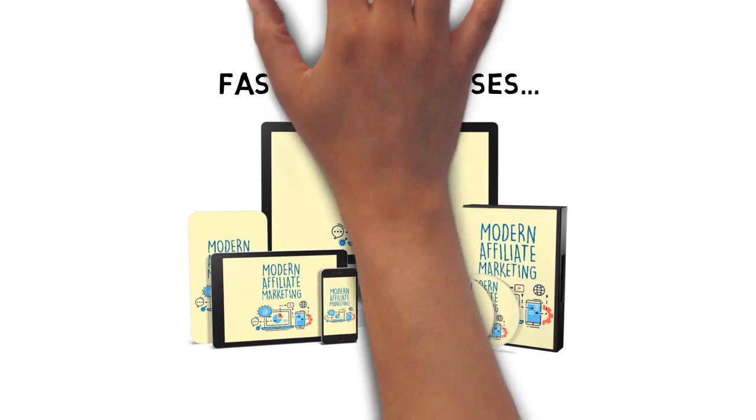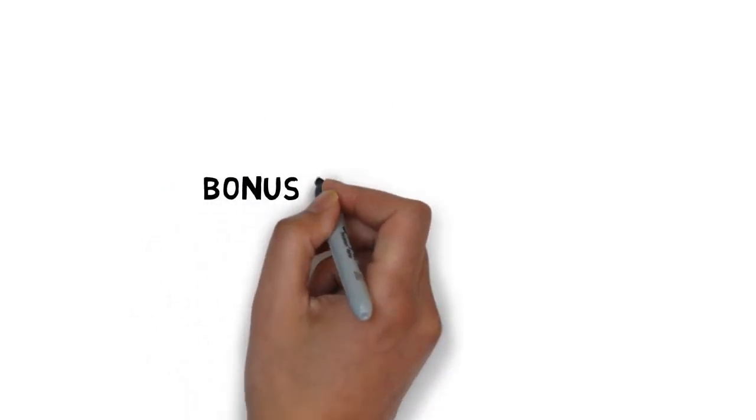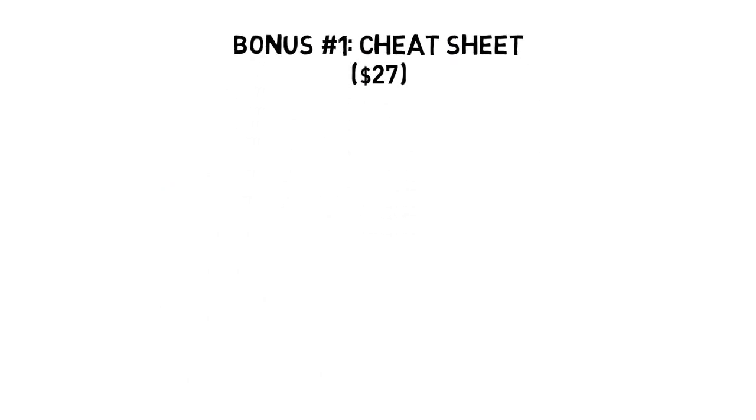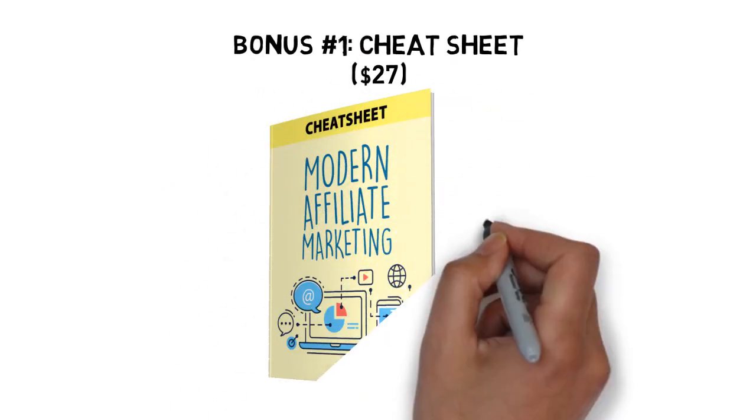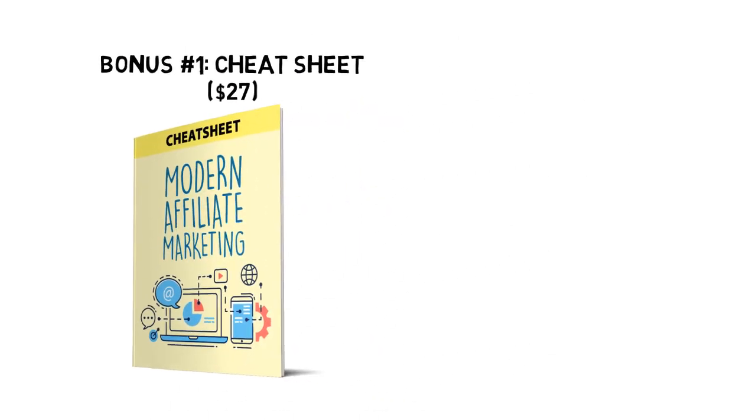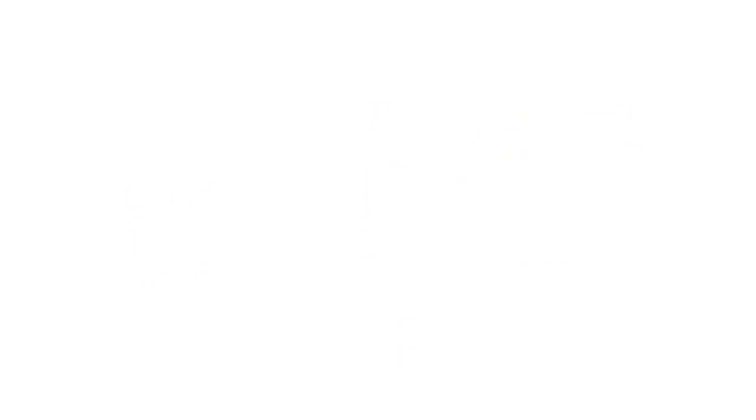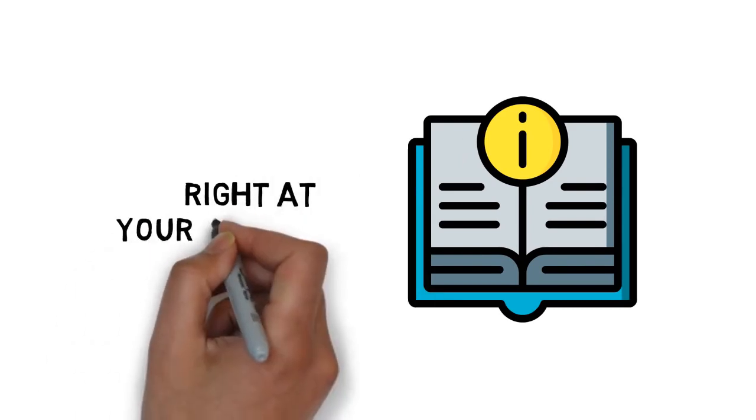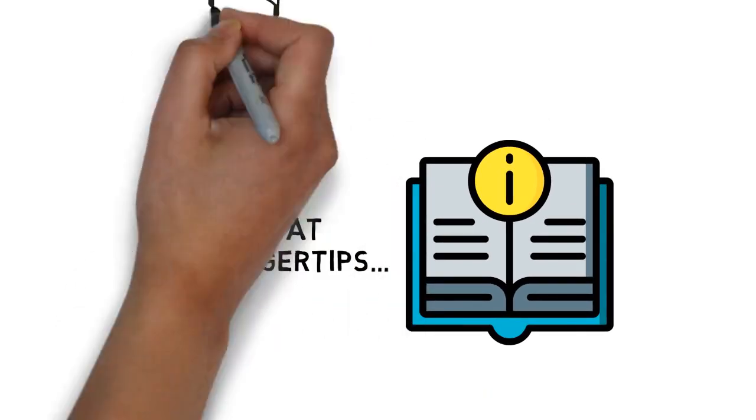When you make the wise decision to grab this today, you'll also get these fast action bonuses. Fast action bonus number one, modern affiliate marketing strategies cheat sheet, valued at $27. This cheat sheet is a handy checklist that makes it easy to get started. It breaks up the entire guide into easy-to-follow steps so that you can make sure you have all the highlights of everything covered inside right at your fingertips.